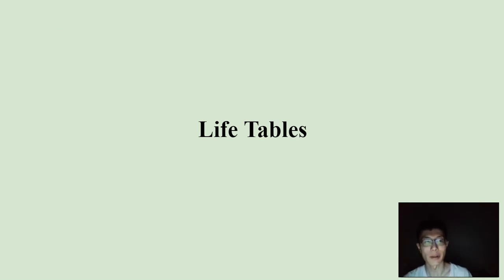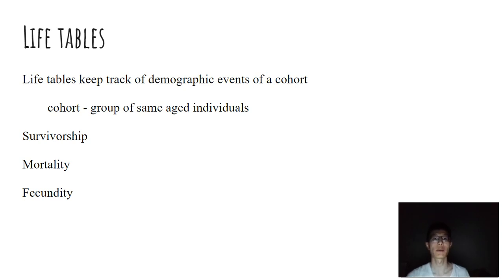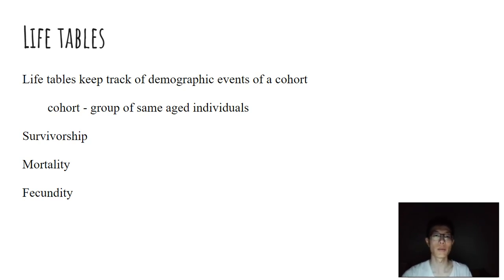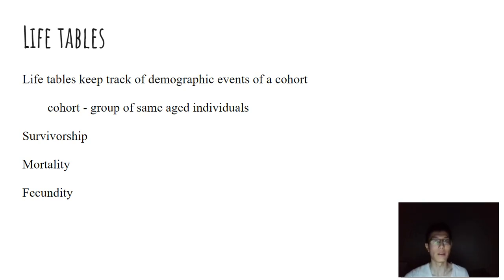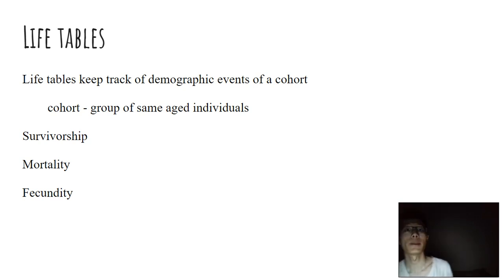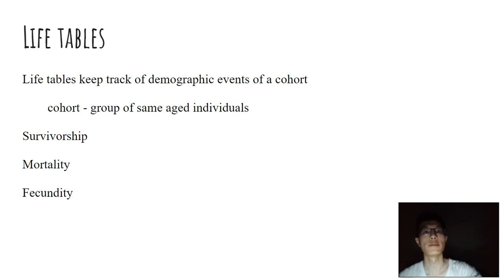Life tables are pretty interesting because you can use them to track demographic events of cohorts of organisms. A cohort in this context is just a group of individual organisms of the same age. You can think about people being born around the same time as a cohort, or certain species like birds being born in the same season. You can keep track of these demographics over time by checking on their survivorship, rates of mortality, as well as rates of fecundity.